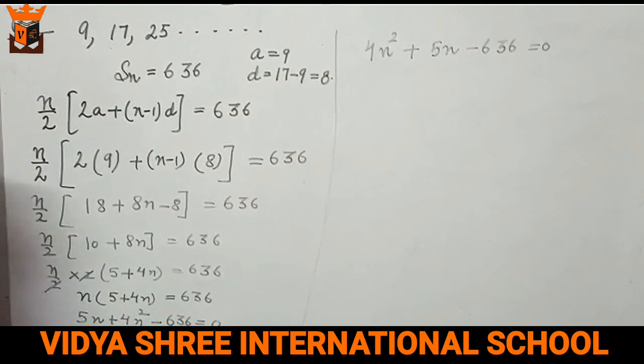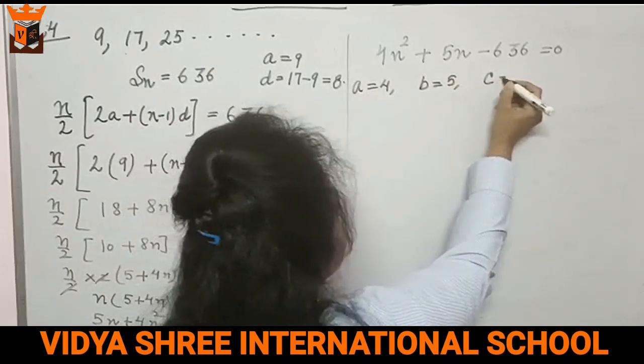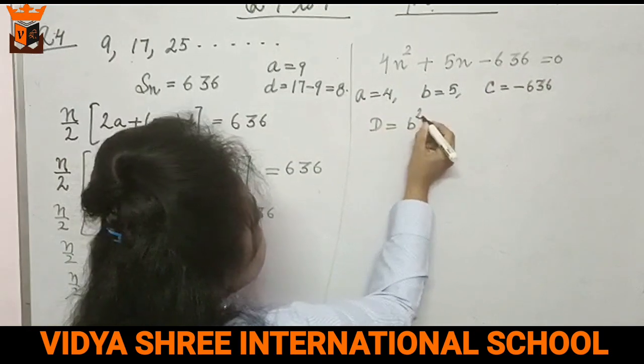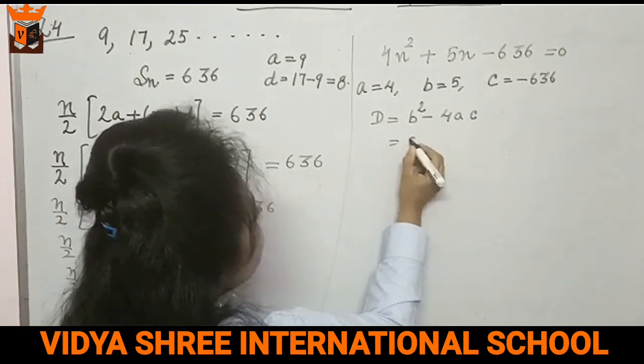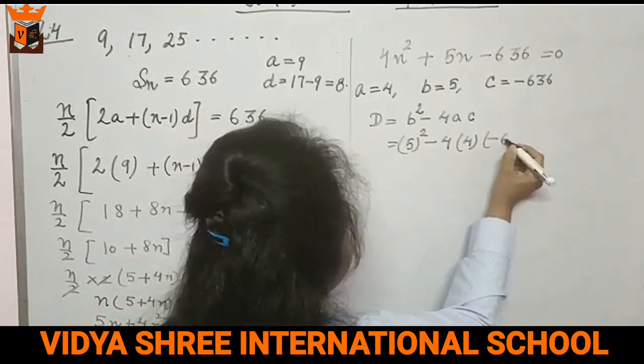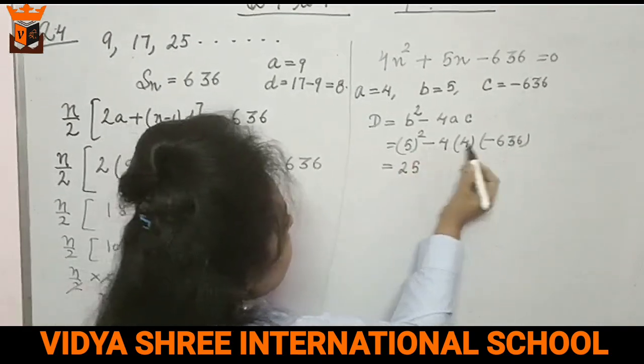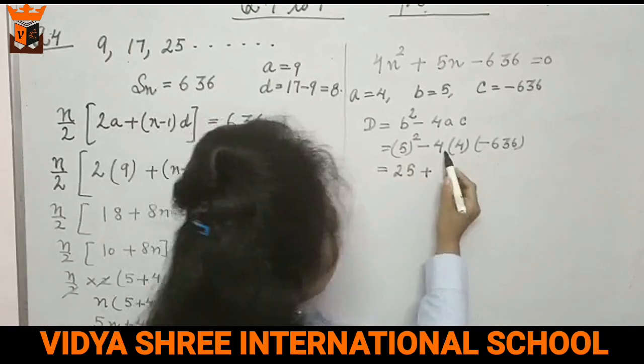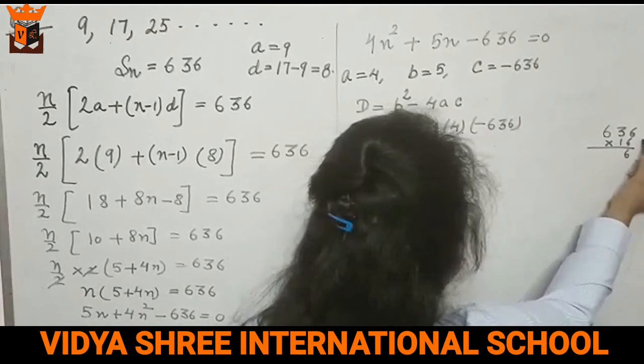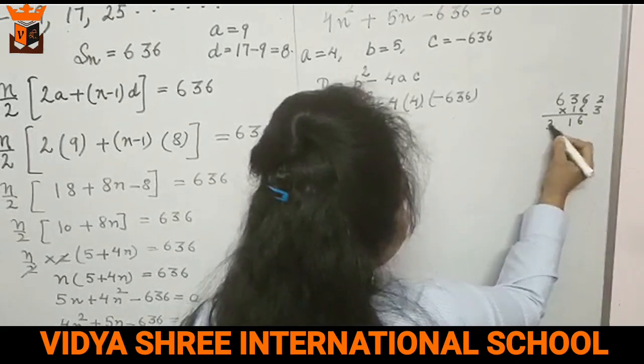So a is 4, b is 5, and c is minus 636. So what is d? This is b square minus 4ac. So 5 square minus 4 into 4 into minus 636. 5 square is 25, minus minus plus, so 4 times 4 is 16.